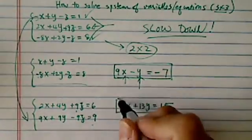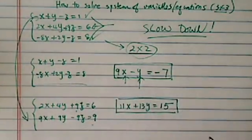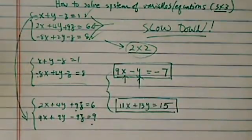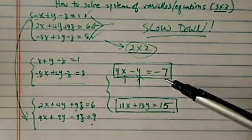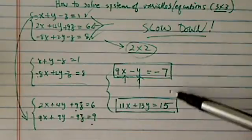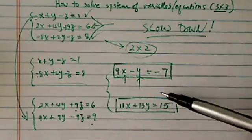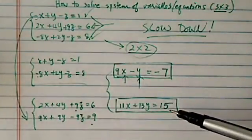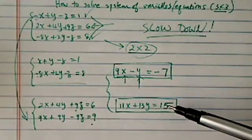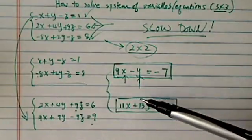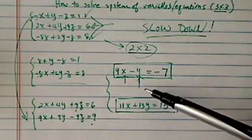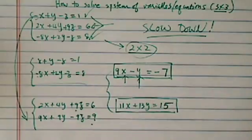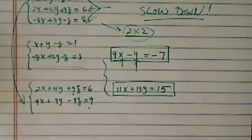Notice how slowly I'm writing. I don't want to make any mistakes, because there's no point in keep solving if I got those two equations wrong. Let's double check and make sure everything looks fine. That looks good.